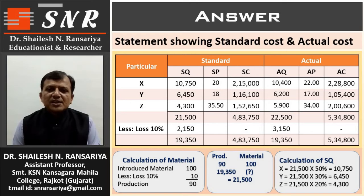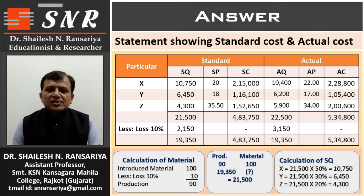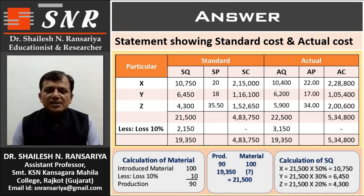Actual quantity for X: 10,400; actual price: 22; actual cost: 2,28,800. For Y: 6,200 × 17 = 1,05,400. For Z: 5,900 × 34 = 2,00,600. Total actual quantity: 22,500. Actual production given is 19,350, so actual loss is 3,150. Total actual cost: 5,34,800. Scrap value is not available, so net actual cost remains 5,34,800.